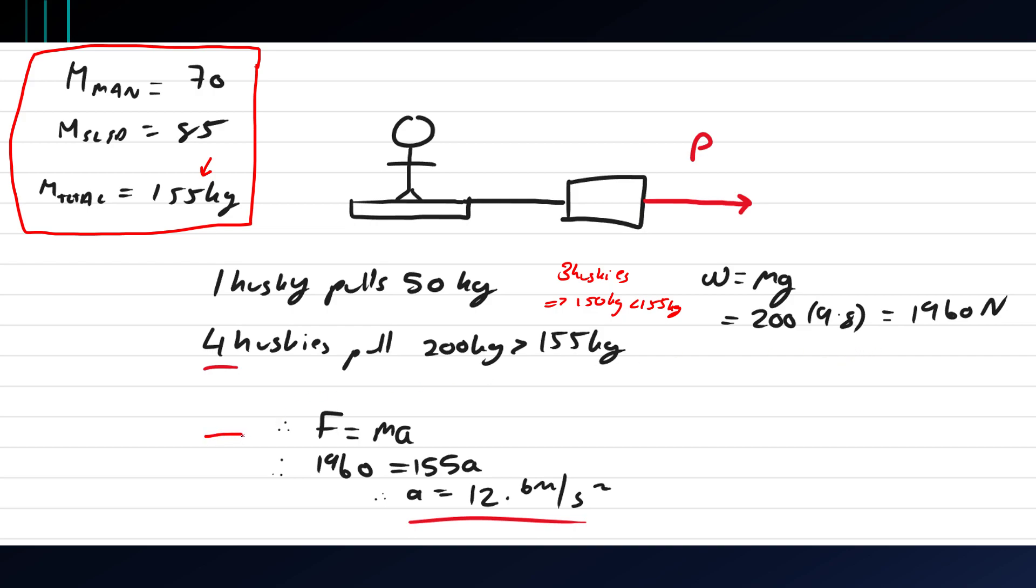Using F equals ma, we can say that the 1960, because friction is negligible we're not counting any air resistance either, is equal to the mass which is our total mass of 155 times the acceleration.